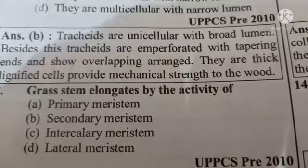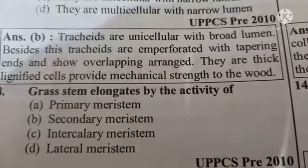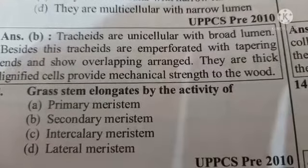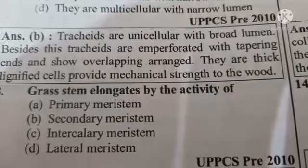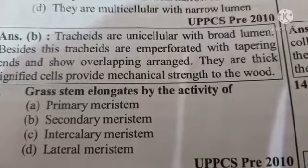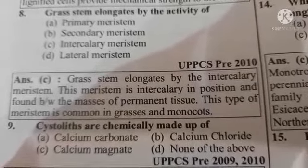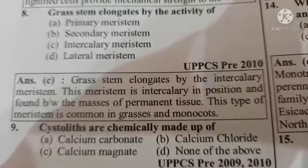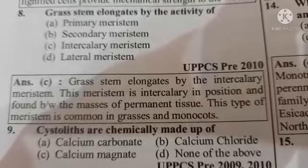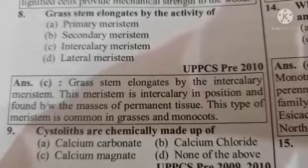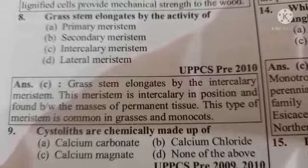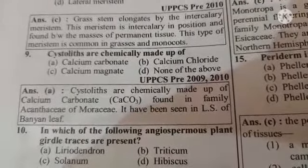Next question: grass stem elongates by the activity of option A primary meristem, option B secondary meristem, option C intercalary meristem, option D lateral meristem. The answer is option C, intercalary meristem. Next question: cystoliths are chemically made up of option A calcium carbonate, option B calcium chloride, option C calcium magnesium, option D none of the above. The answer is option A, calcium carbonate.